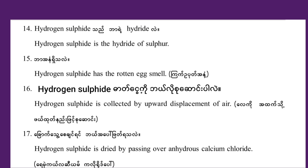Hydrogen sulfide gas is the hydride of sulfur. Hydrogen sulfide gas has a rotten egg smell. Hydrogen sulfide is collected by upward displacement of air.